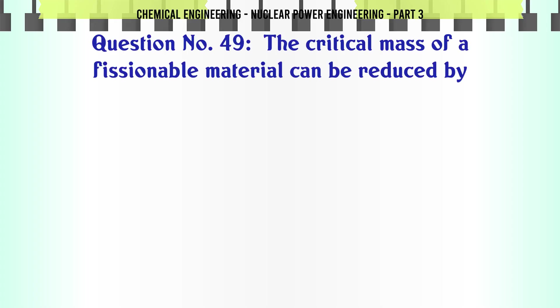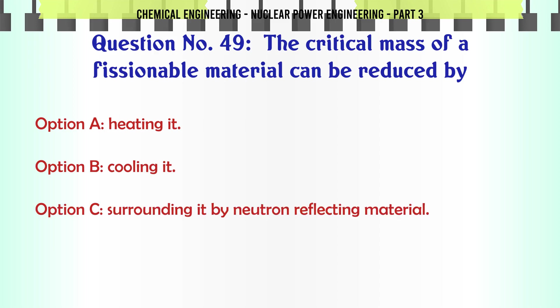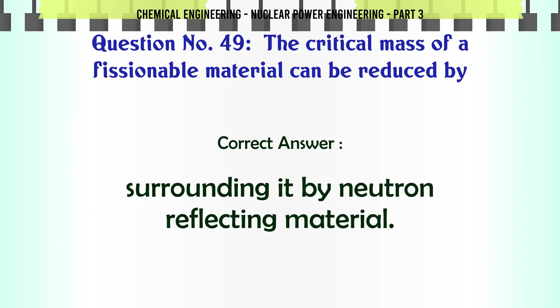The critical mass of a fissionable material can be reduced by surrounding it by neutron reflecting material. The correct answer is surrounding it by neutron reflecting material.